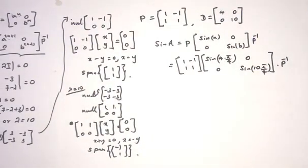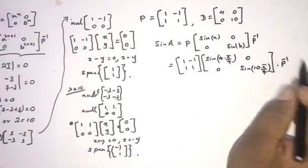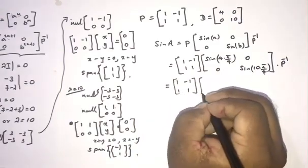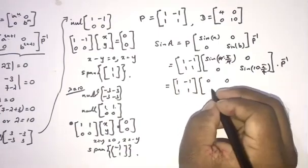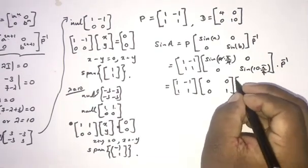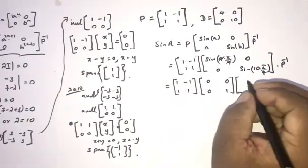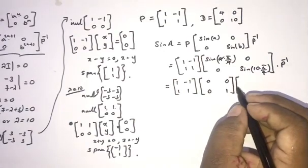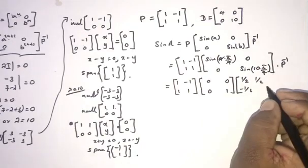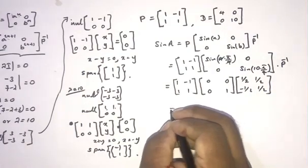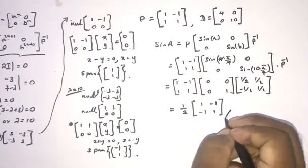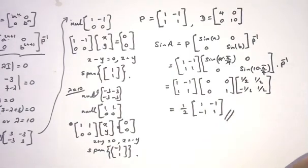We find P⁻¹ = (1/2) [[1, 1], [-1, 1]]. Since sin(π) = 0 and sin(5π/2) = 1, the diagonal matrix becomes [[0, 0], [0, 1]]. Multiplying out: sin(A) = (1/2) [[1, -1], [1, 1]] [[0, 0], [0, 1]] [[1, 1], [-1, 1]], giving the final answer [[1, -1], [-1, 1]] times one half, so sin(A) = (1/2) [[1, -1], [-1, 1]]. Please subscribe to the channel. Thank you for watching.